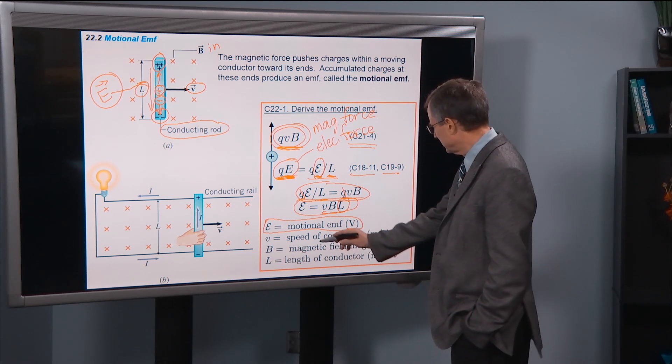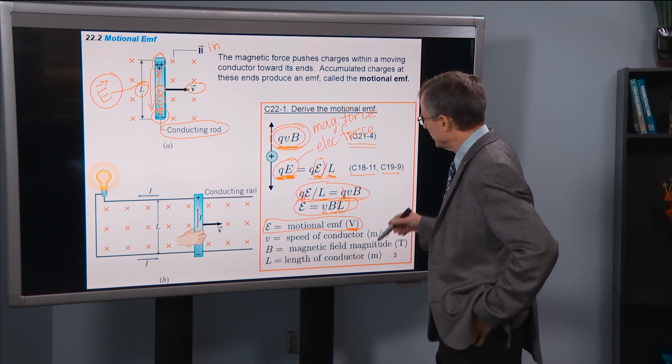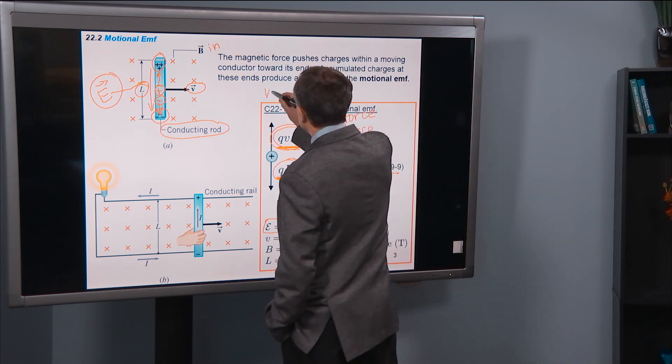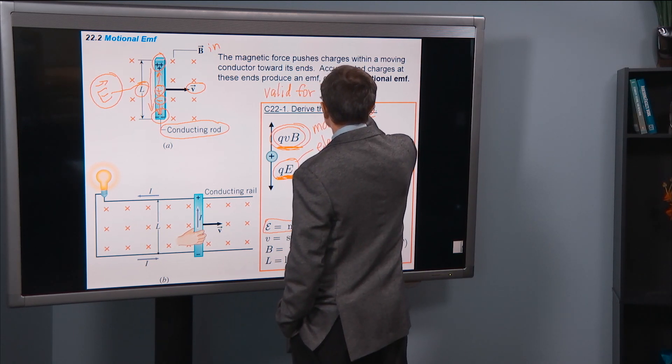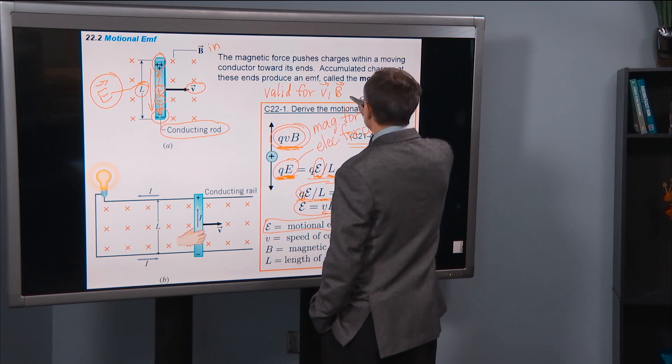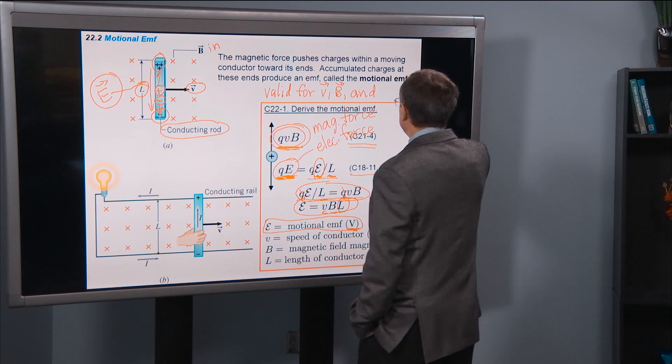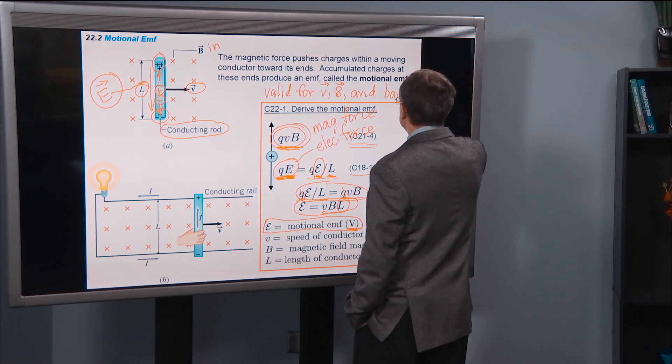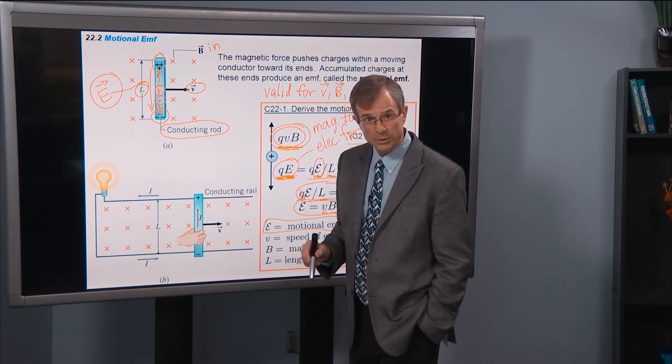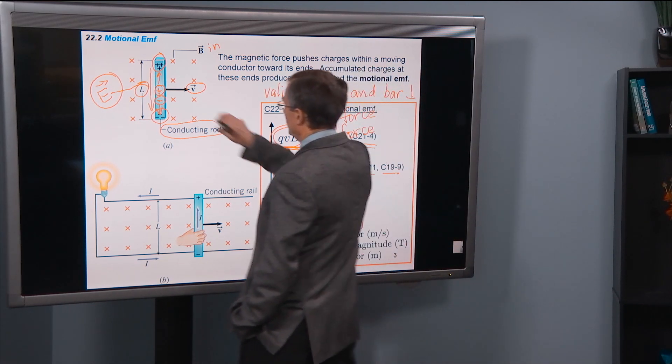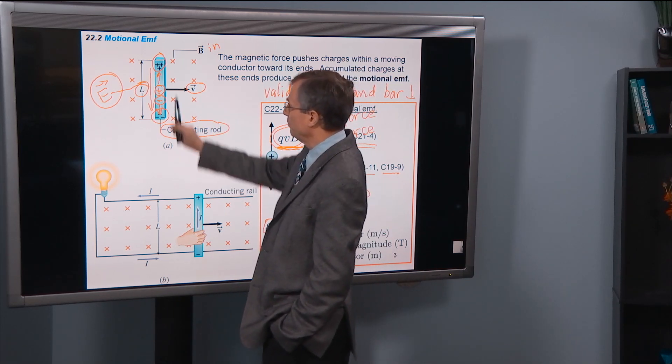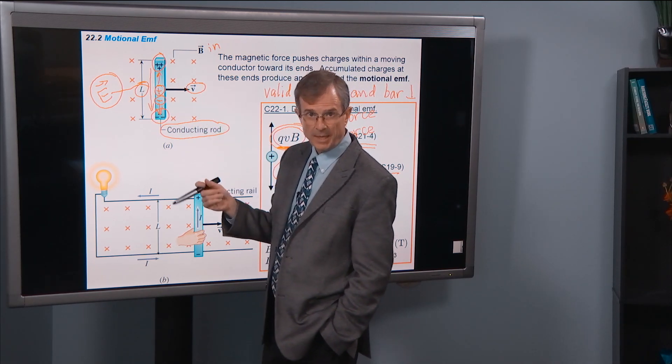Speed of the conductor, the magnetic field magnitude. And this whole derivation is valid for velocity, magnetic field, and a bar that are mutually perpendicular to each other. So the velocity is perpendicular to the magnetic field. The bar is perpendicular to the velocity and the magnetic field. But this is the only case that we'll be concerned with in the class.